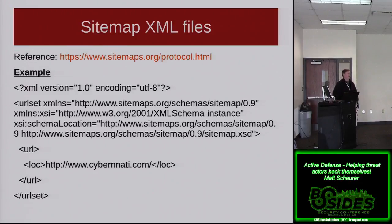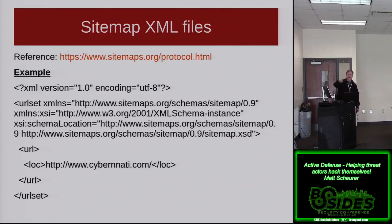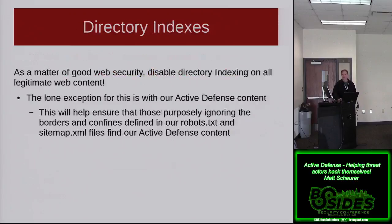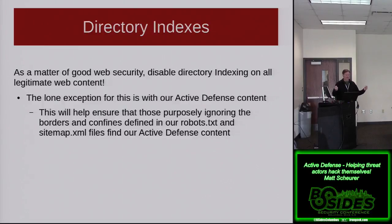What goes hand-in-hand with that is the sitemap.xml file, which essentially tells the rest of the internet where to find the legitimate content. The location string with the URL says stay in the root folder — do not venture into subfolders. For active defense content, we want to actually leave indexing on in just those locations. Be very careful to make sure it's only those locations.